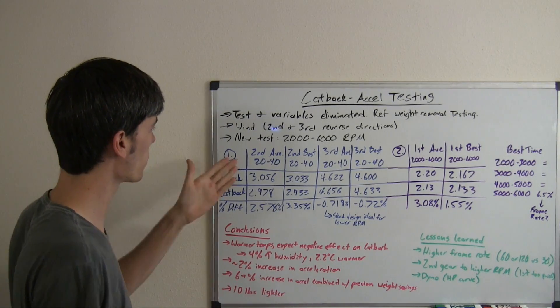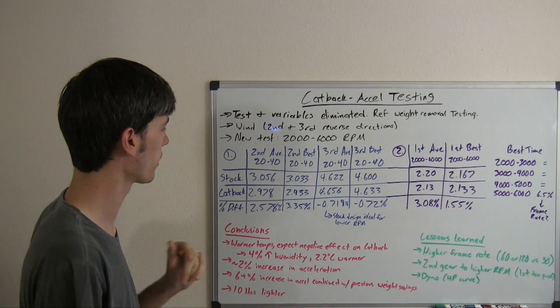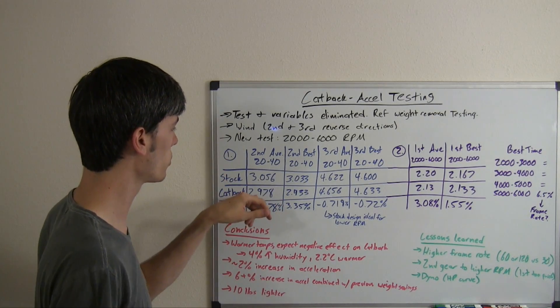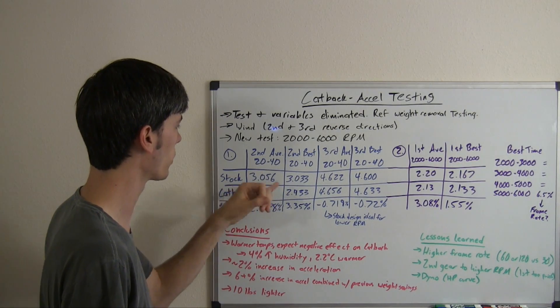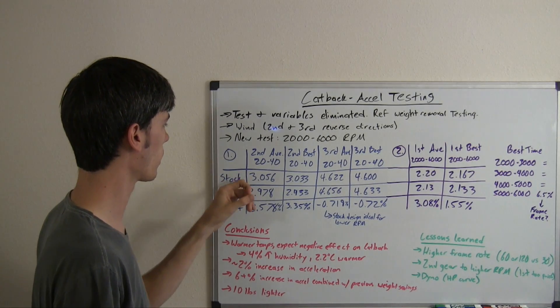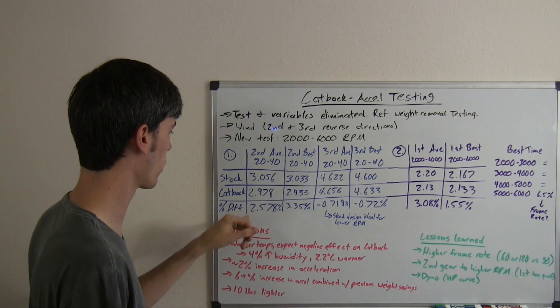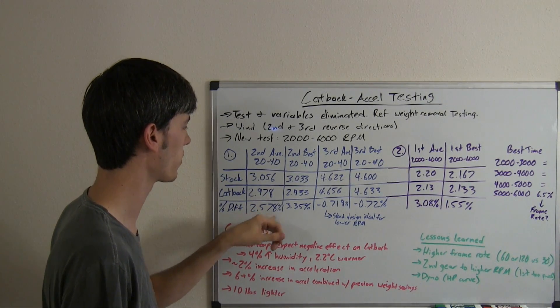As you can see there, there actually was an improvement from the stock to the cat-back exhaust. The average time for the cat-back exhaust being 2.978 seconds accelerating from 20 to 40 versus 3.056 for the stock exhaust. The percent difference of 2.578%.